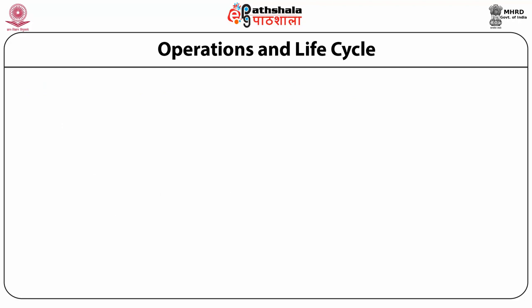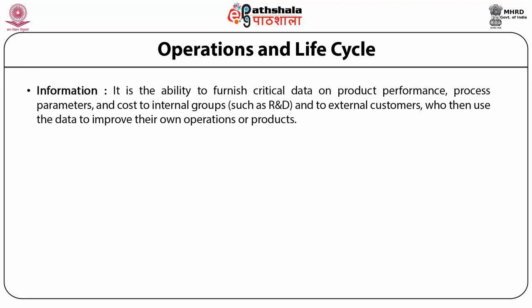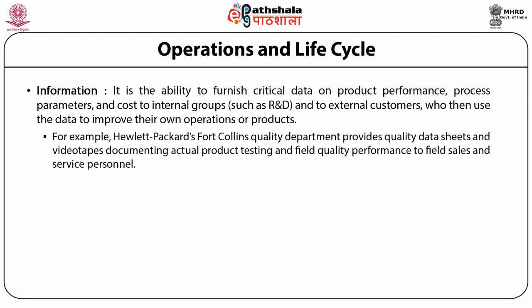Before we move ahead, let us understand some basic definitions. Information is the ability to furnish critical data on product performance, process parameters, and cost to internal groups such as R&D, and to external customers who then use the data to improve their own operations or products. For example, Hewlett-Packard's Fort Collins quality department provides quality data sheets and videotapes documenting actual product testing and field quality performance to field sales and salespeople.